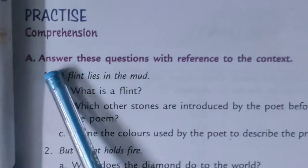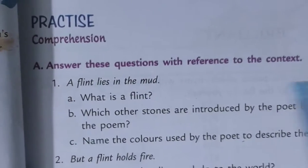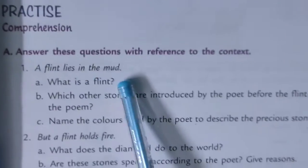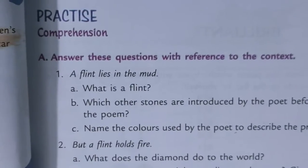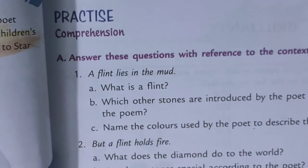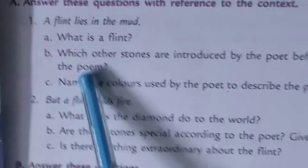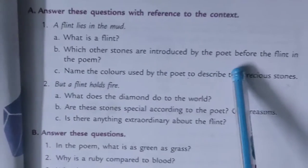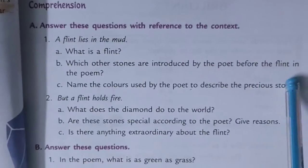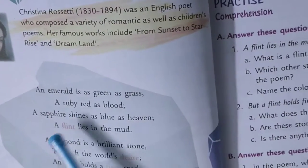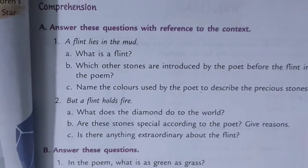Now go to the exercises. Question number A: Answer these questions with reference to the context. A flint lies in the mud. What is a flint? Here the answer is: a kind of hard grey rock that starts a fire when rubbed against something rough. Which other stones are introduced by the poet before the flint in the poem? Emerald, ruby, sapphire, diamond and opal.